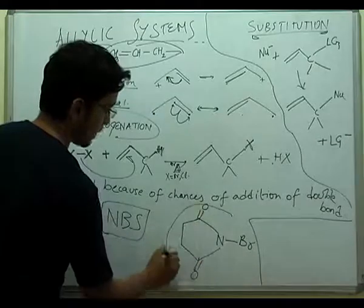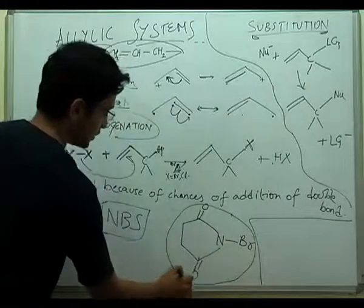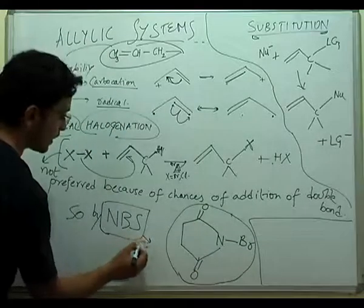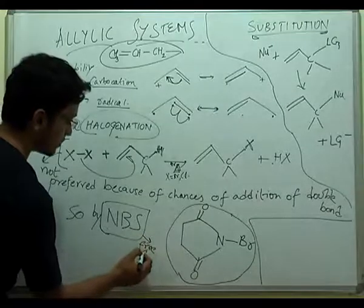This is the structure of N-bromosuccinimide. This reaction also goes by free radical mechanism which is already given in the above.